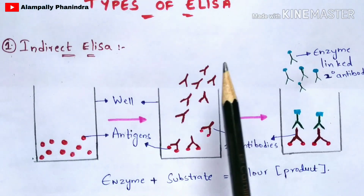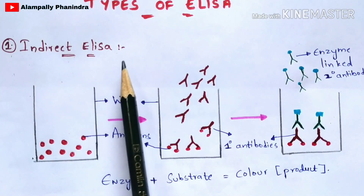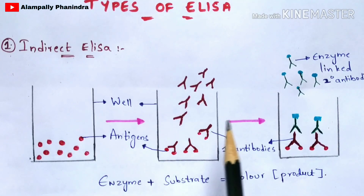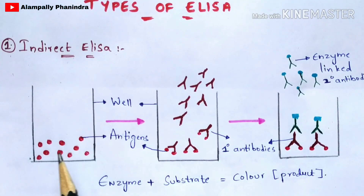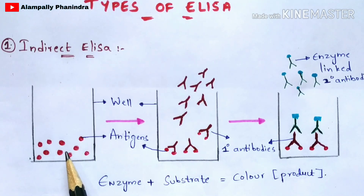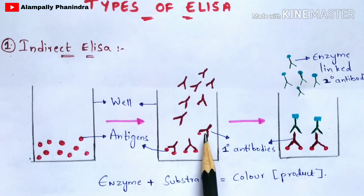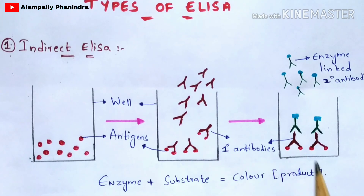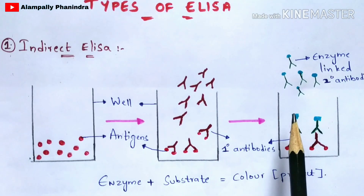The first type is indirect ELISA. In the first step, antigens are added to the wells. In the second step, antibodies are added, which react with the antigens to form the antigen-antibody complex. The antibodies added in this second step are called primary antibodies, shown here in brown color.